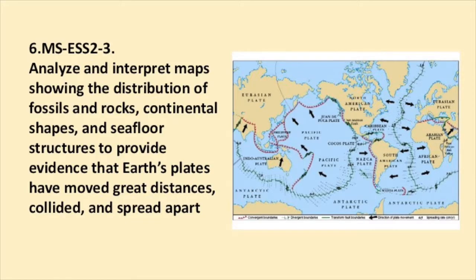For Standard 6.MSESS2-3, students will analyze and interpret maps showing the distribution of fossils and rocks, continental shapes, and seafloor structures to provide evidence that the Earth's plates have moved great distances, collided, and spread apart. In this image to the right, you will see that the crust of the Earth is not one solid piece, but is broken up into irregular shapes. We call these tectonic plates.